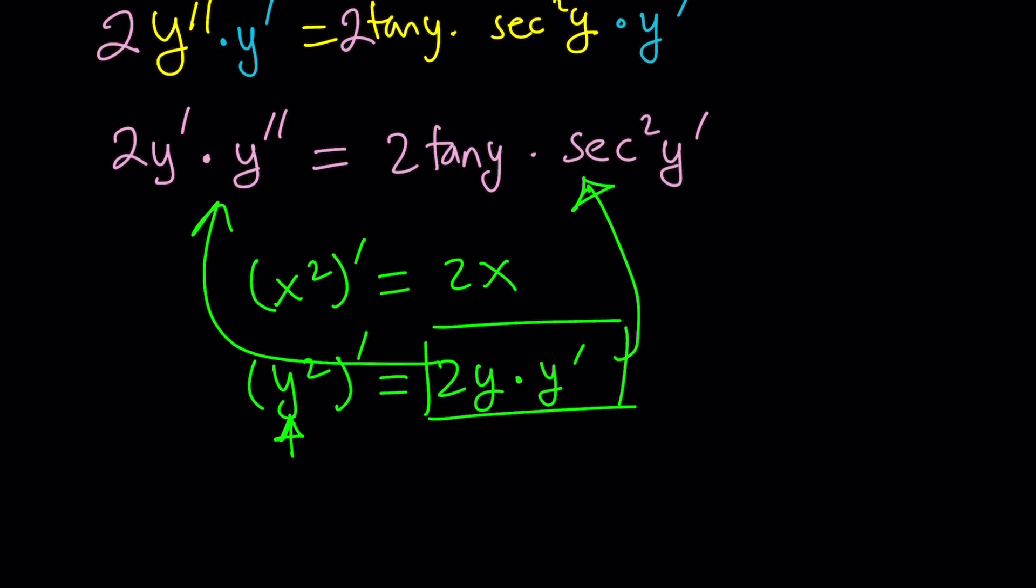Notice that on the left hand side, we have the same pattern, except y was replaced with y prime and y prime was replaced with y double prime. And something similar happens on the right hand side. We get the same pattern. We kind of have a function, 2 times the function, times its derivative. And then 2 times the function times its derivative. You know what that means?